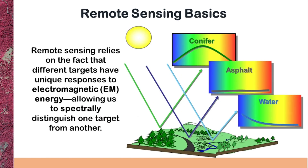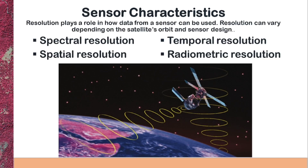Here you can see in the diagram that the sun is emitting radiations, which strike different targets on the earth's surface, and these targets reflect the radiations differently. Conifer will reflect radiations differently from asphalt, and asphalt will reflect differently from water. Every target has unique characteristics in responding to electromagnetic radiations — just like the fingerprints of human beings that make them distinguishable from one another.